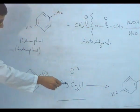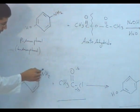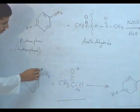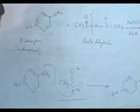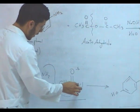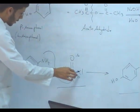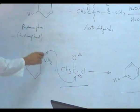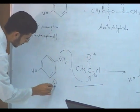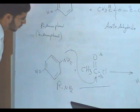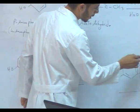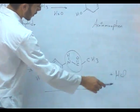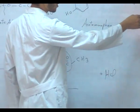Here we can see that in this reaction with acetyl chloride, the amine acts as a nucleophile, which will react with and attack the carbonyl group. In this compound, the chloride will be replaced by the primary amine, yielding the amide group and HCl as a byproduct.